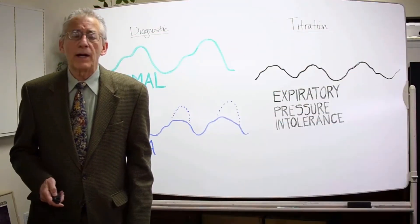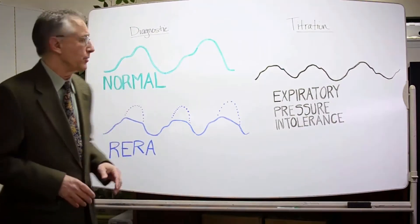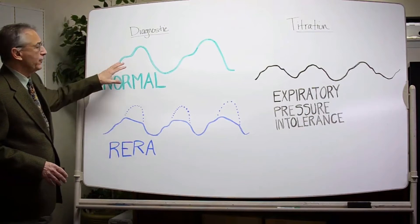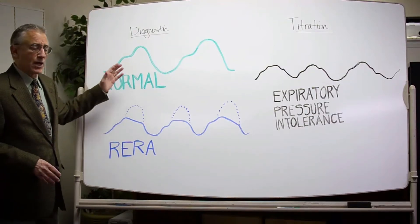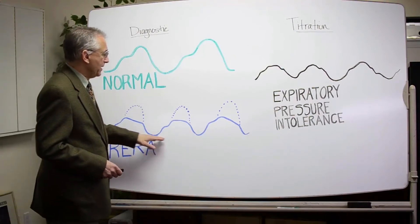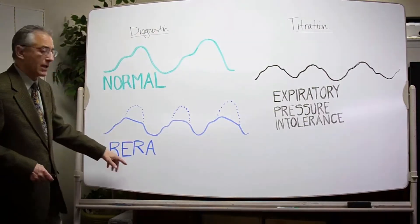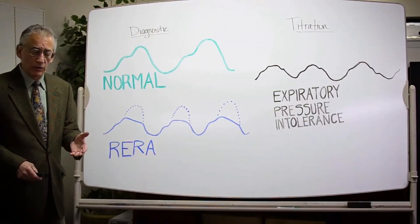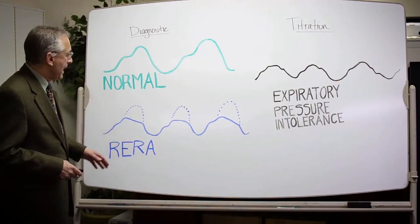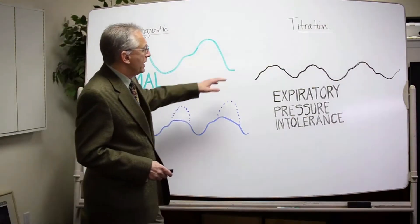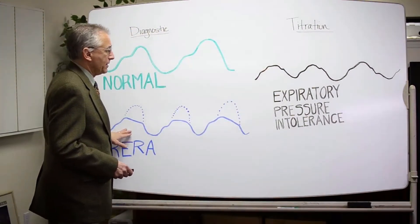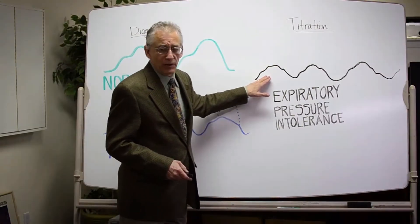When we think about trying to treat these individuals, we normally recognize that the airflow curve should be rounded on inspiration and expiration as our target. But we often run into difficulty dealing with respiratory-effort-related arousals, or flow limitations — the two discrete terms for upper airway resistance. What happens is we conduct a titration trying to eliminate the RERAs, but instead we end up with expiratory pressure intolerance.